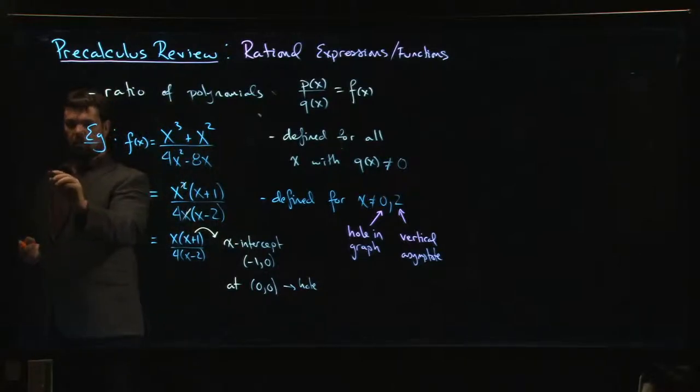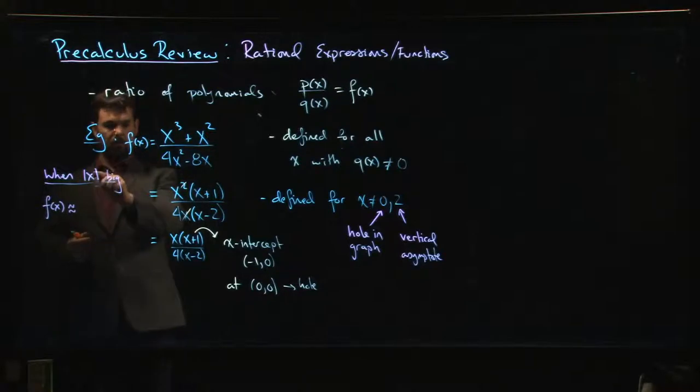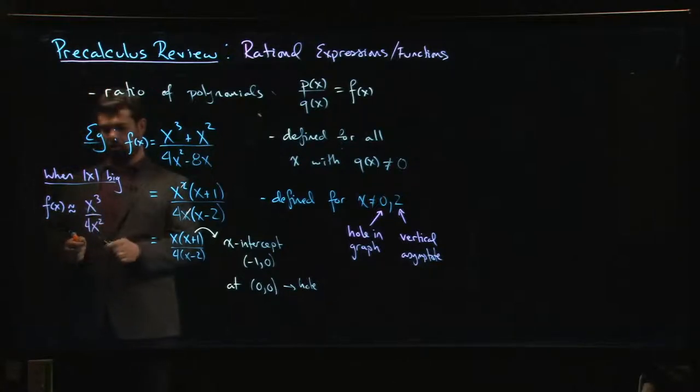You can ask about the end behavior - what happens when the absolute value of x is big. When the absolute value of x is big, our function behaves roughly like... what happens is you can ignore the lower order terms. You keep the top degree terms on the top and the bottom, so you have x cubed over 4x squared.